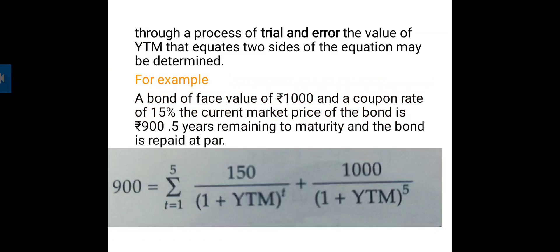For example, consider a bond with a face value of 1,000 and a coupon rate of 15%. The current market price of the bond is 900, with 5 years remaining to maturity. The bond is repaid at face value. So face value is 1,000, coupon rate is 15%, market price is 900, and maturity is 5 years.